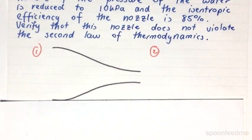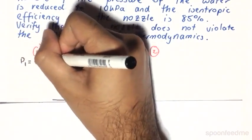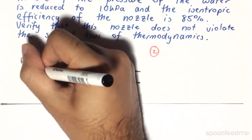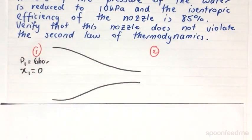We know that the entrance pressure is going to be 6 bar. And we know that it's going to be a saturated liquid which means that the entrance quality is going to be 0.